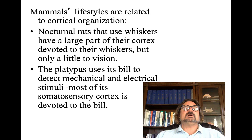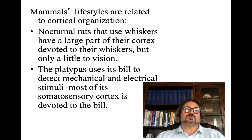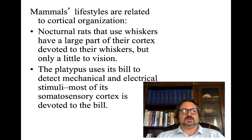Mammals' lifestyles are related to cortical organization. Nocturnal rats that use whiskers have a large part of their cortex devoted to whiskers but only a little to vision. The platypus uses its bill to detect mechanical and electrical stimuli, and most of its somatosensory cortex is devoted to the bill. A raccoon, by contrast, has a really large sensory motor area dedicated to its paws, because it's very good at manipulating things with its digits — which is why they're so frustrating for homeowners trying to keep garbage in the can.